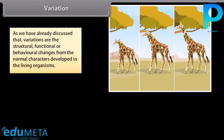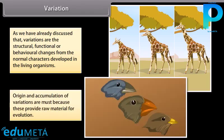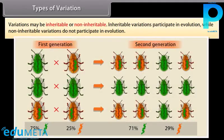Variations are the structural, functional or behavioral changes from the normal characters developed in living organisms. Origin and accumulation of variations are essential because they provide raw material for evolution. Inheritable variations participate in evolution, while non-inheritable variations do not participate in evolution.